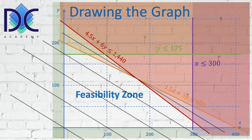We continue moving it farther and farther away until we reach the last point, which is the intersection of the two lines — the last point of the feasibility zone. We can identify and calculate this point as (160, 120). In some cases we would be able to read it from the graph if there were more grid lines, but that's not always the case.